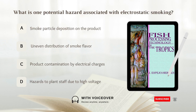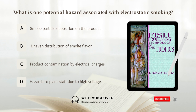What is one potential hazard associated with electrostatic smoking? Answer: D. Hazards to plant staff due to high-voltage.